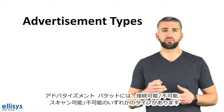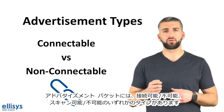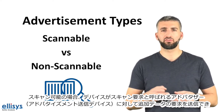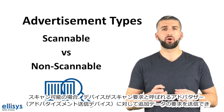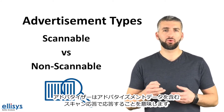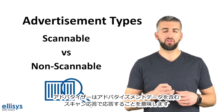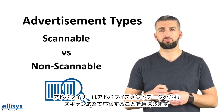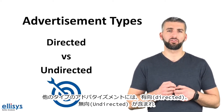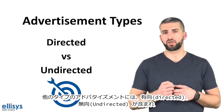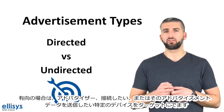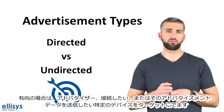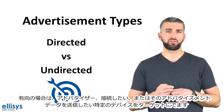Advertisement packets have different types. They can be either connectable or non-connectable, scannable or non-scannable. Scannable means that a device can send a request for additional data from the advertiser in what's called a scan request, and that advertiser responds with a scan response which includes the additional advertisement data. Other types include being directed versus undirected. Directed means that an advertising device can target a specific device that it wants to connect to or send its advertisement data to.